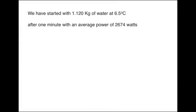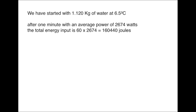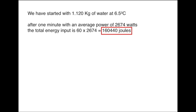We started this experiment with 1.12 kilograms of water at 6.5 degrees Celsius. After a minute with an average power of 2674 watts, the total energy provided is 60 seconds times 2674, which comes to 160440 joules. That is the total energy provided over the course of the 60 seconds the kettle was switched on.